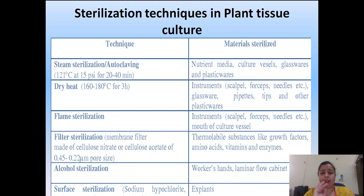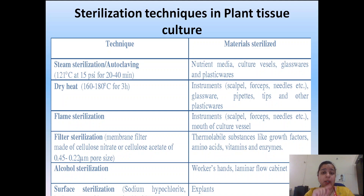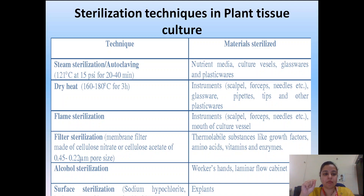For autoclaving, the standard temperature is 121°C, pressure is maintained at 15 psi, and it is done for 30 to 40 minutes. For glassware and plasticware, autoclaving is also applied. Dry heat sterilization is applied to instruments like scalpels, forceps, needles, pipettes, and plastic wires.